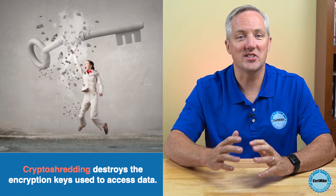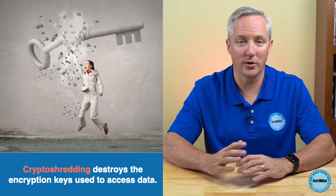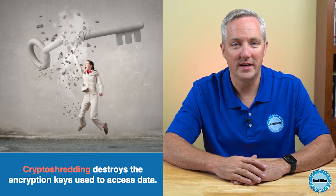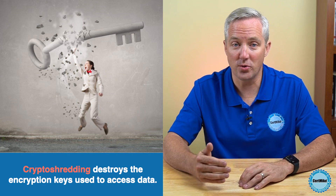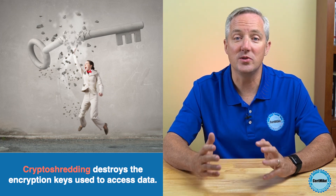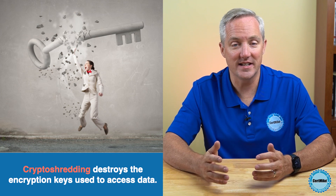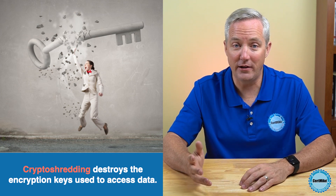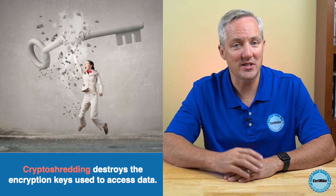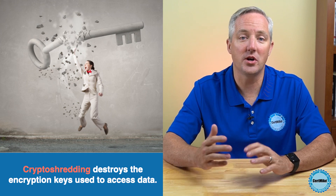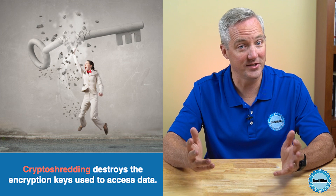Crypto-shredding is a technique for data disposal that leverages the power of encryption. Here's how it works. When data that will later be crypto-shredded is first stored, it's encrypted using a unique encryption key. When you need to delete that data, instead of erasing the data itself, you just destroy the encryption key. Without this key, the encrypted data becomes unreadable, and for all practical purposes, it's destroyed.